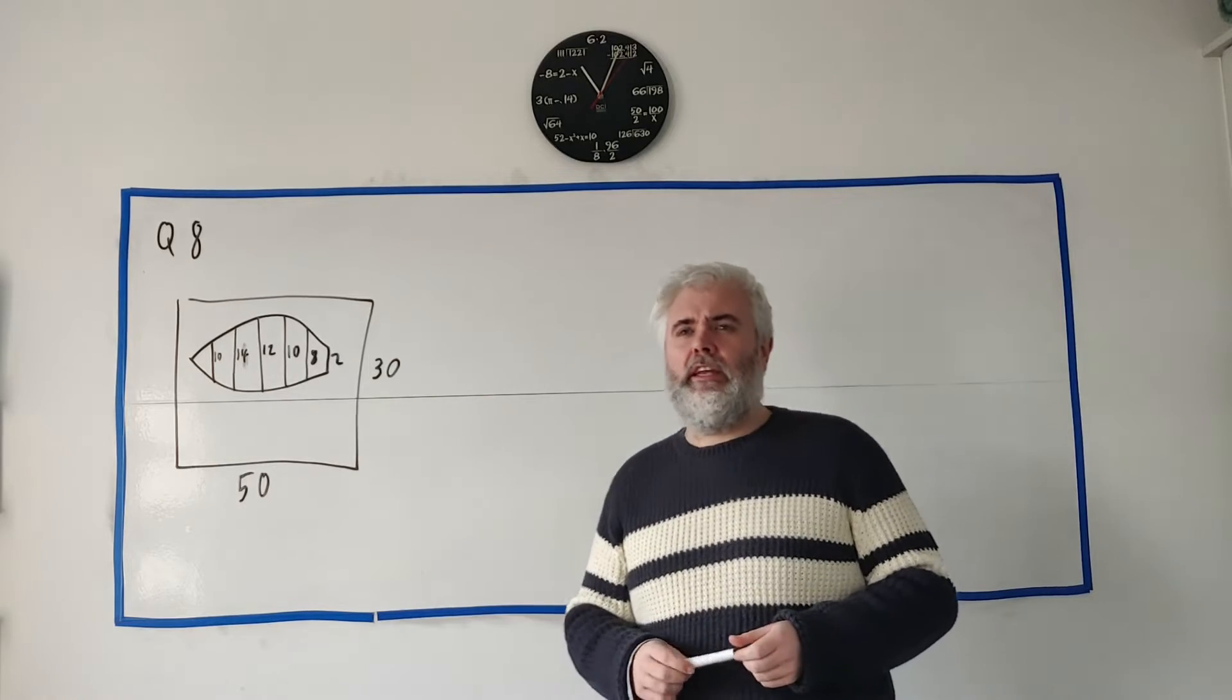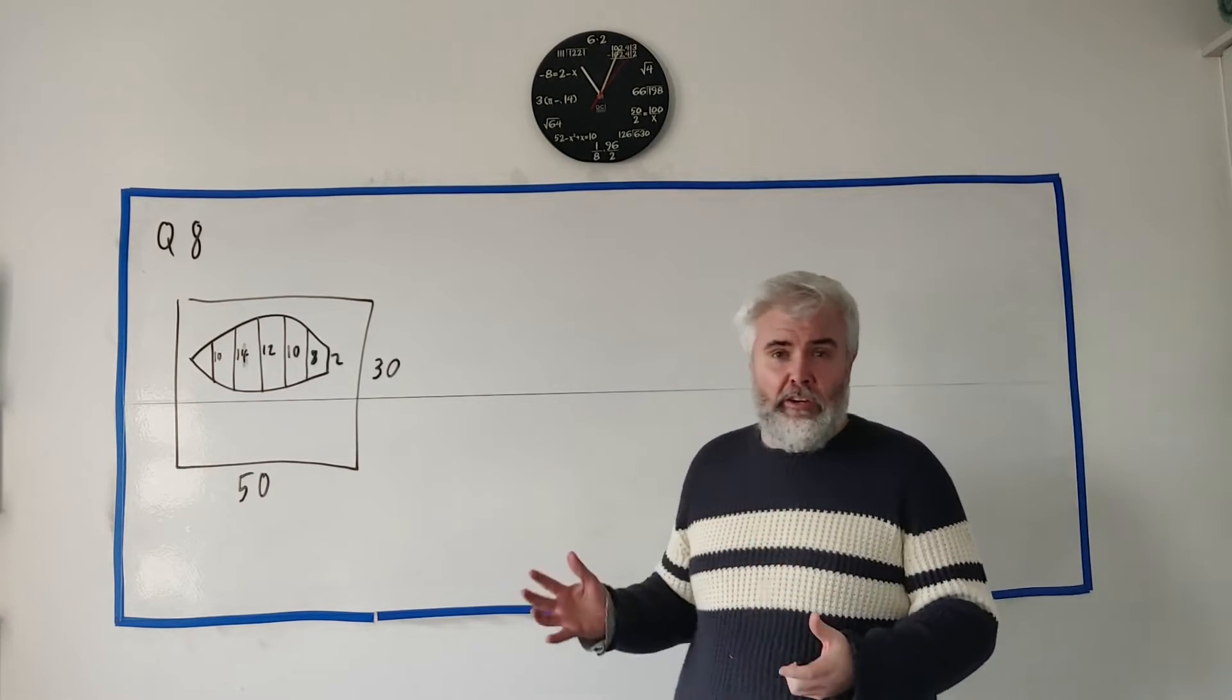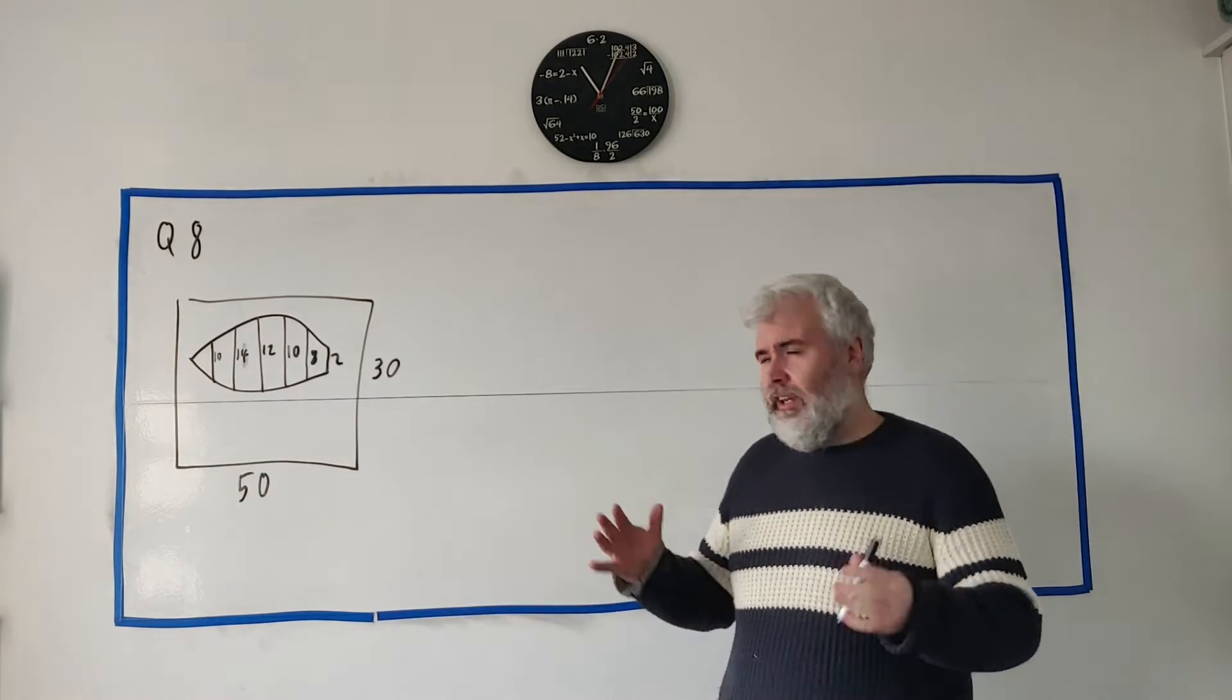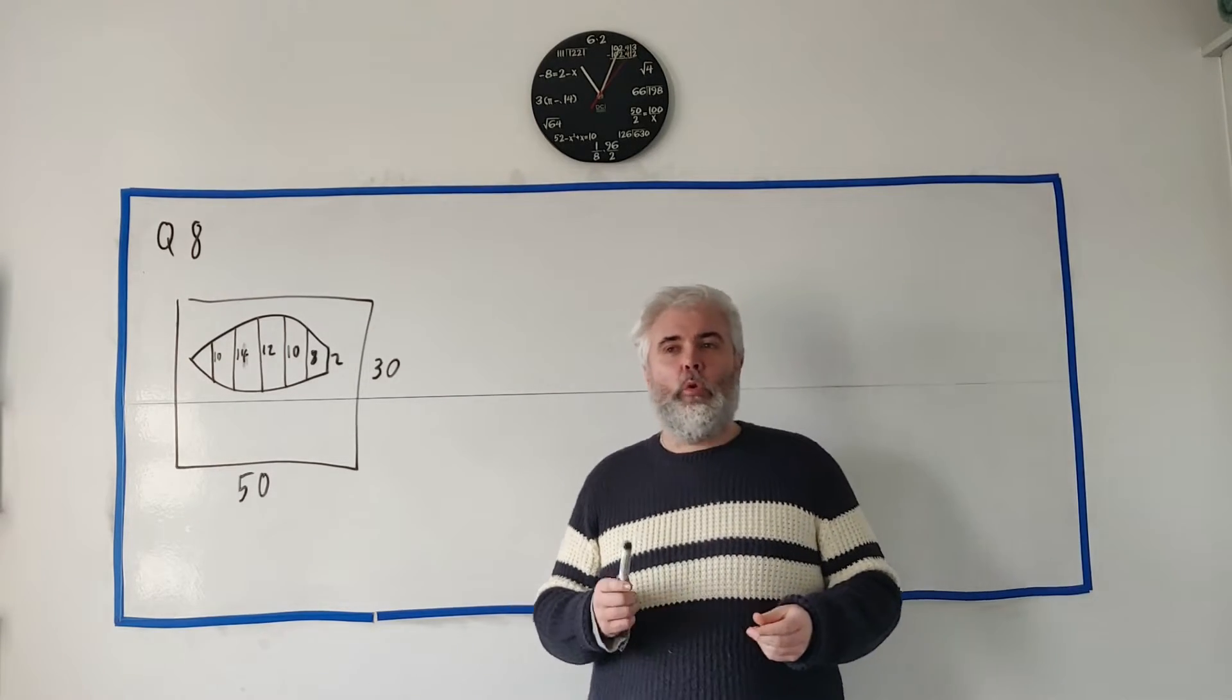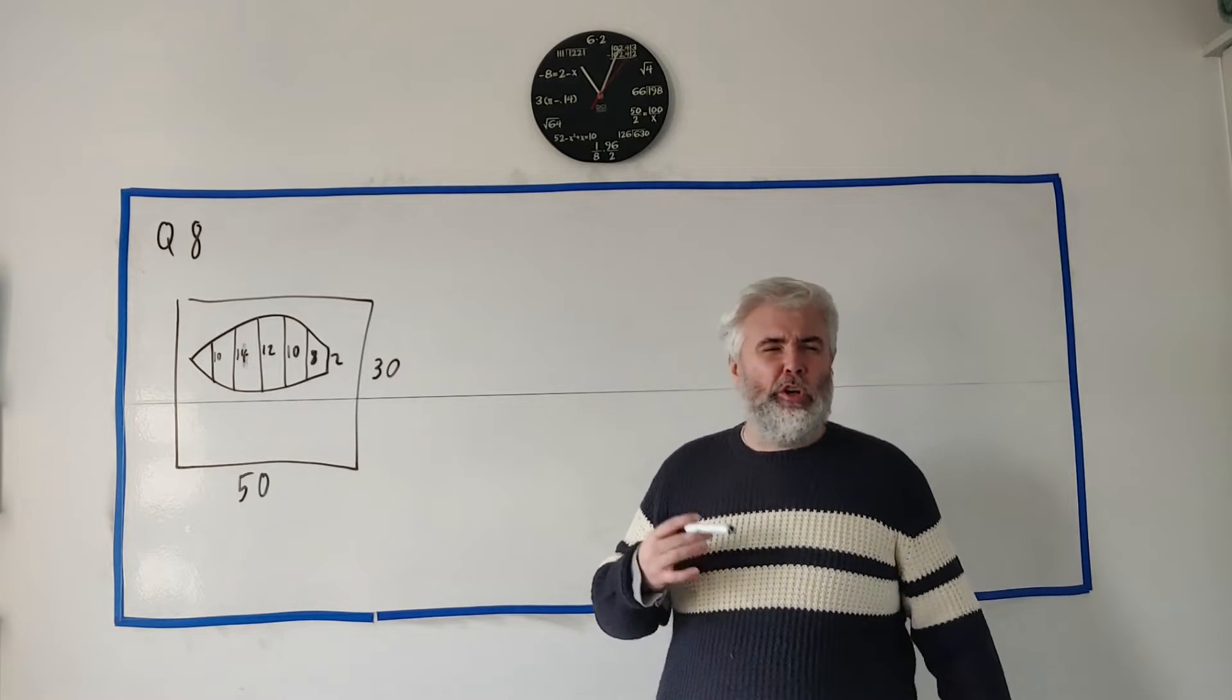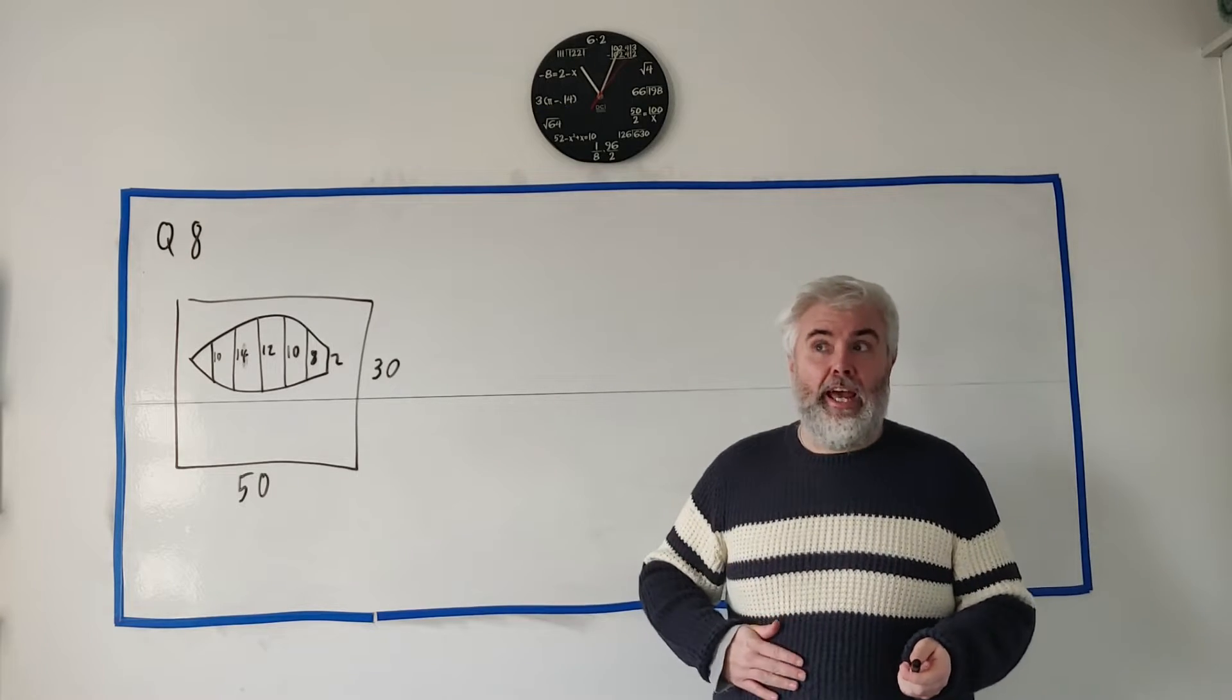This is question eight. In this question we're going to use the trapezoid rule and deal with some areas, a bit of percentages, and a bit of currency changing. We'll be looking at areas and then conversions between currencies and percentages.